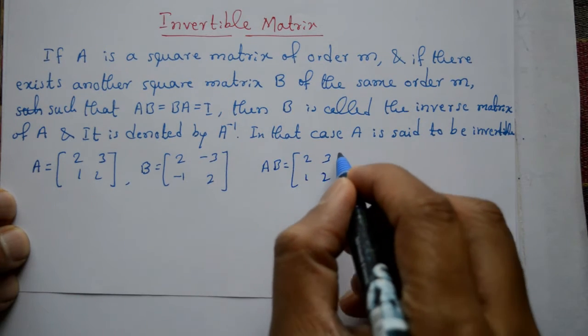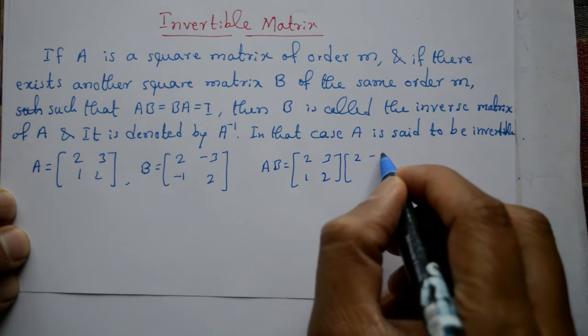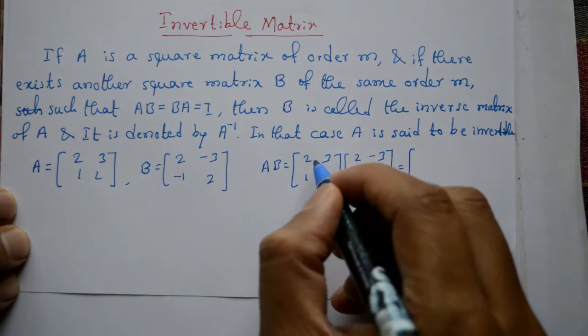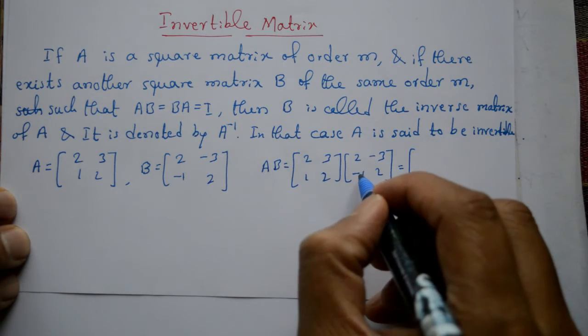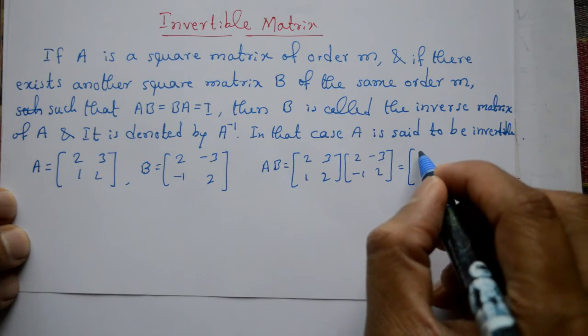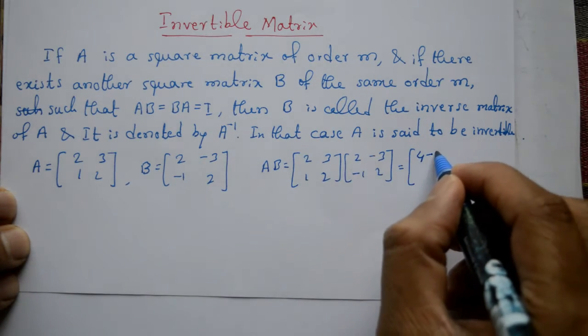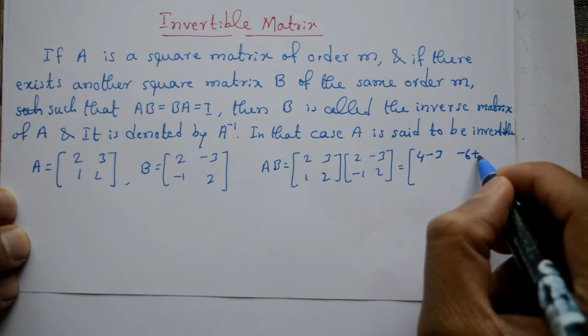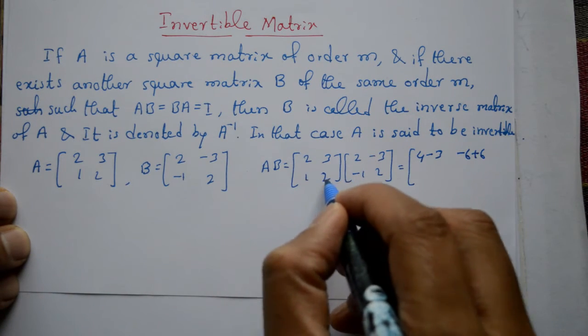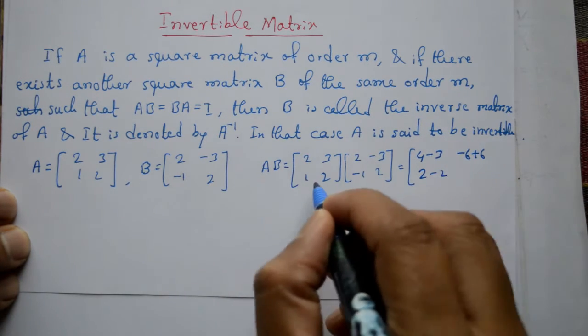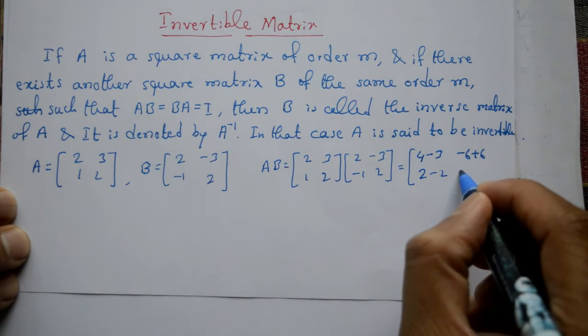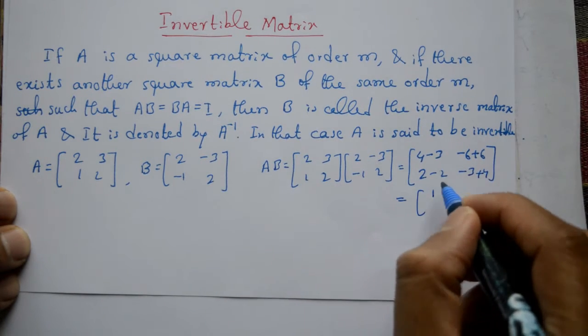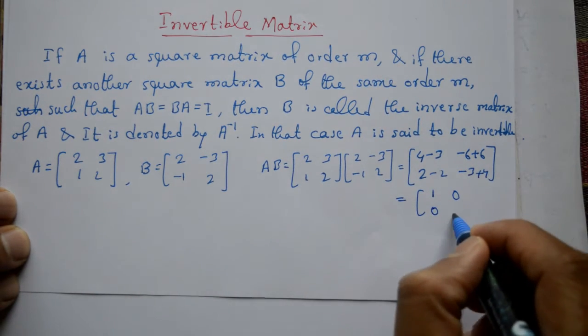Matrix A 2, 3, 1, 2 and matrix B 2, minus 3, minus 1, 2. Iska multiplication karenge. First row into first column, 4 minus 3. First row into second column, minus 6 plus 6. Second row into first column, 2 minus 2. Second row second column, minus 3 plus 4. Iska matrix kya aega, 1, 0, 0, 1 identity matrix aega.